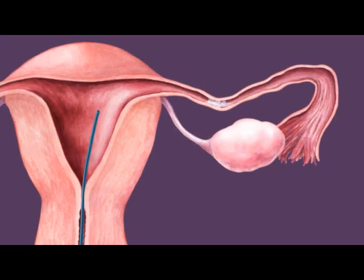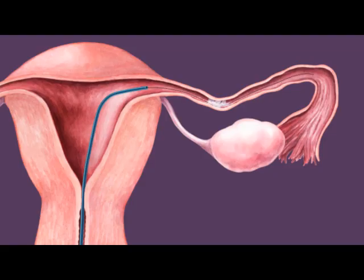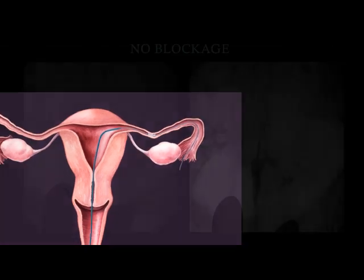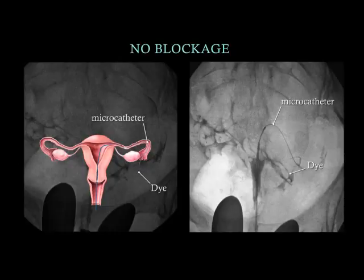The catheter is pushed into the os, or opening, of the blocked tube. A thin guide wire is placed through the catheter, pushed directly through the blockage and out the opened end of the fallopian tube. A small micro-catheter is then fed through the first catheter and over the guide wire out the fallopian tube. Dye is sent through the micro-catheter, and a new x-ray should show the dye flowing out the opened end of the fallopian tube.